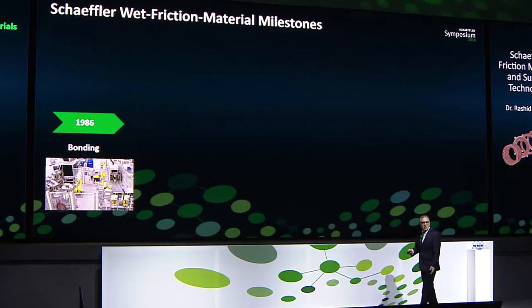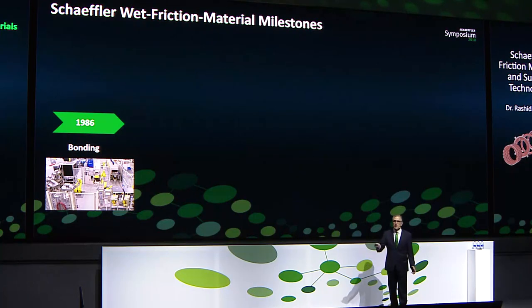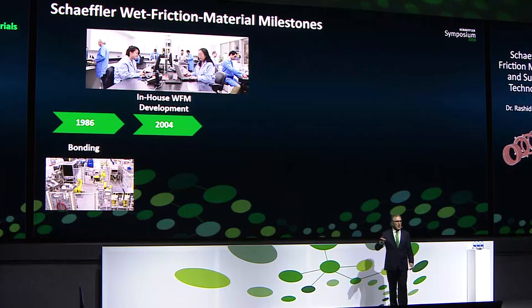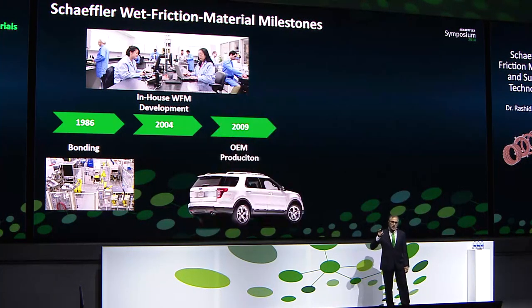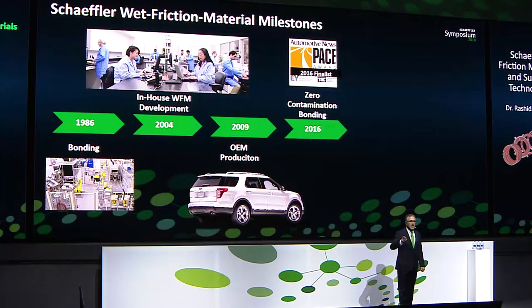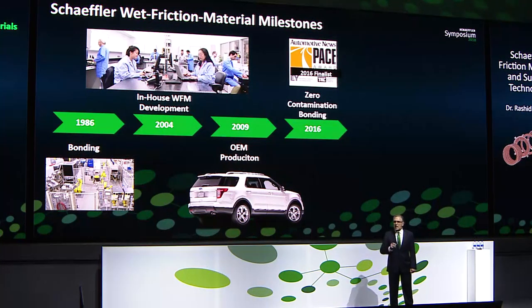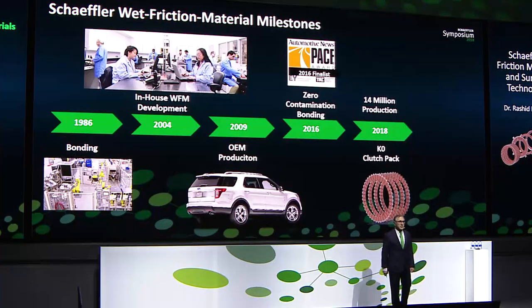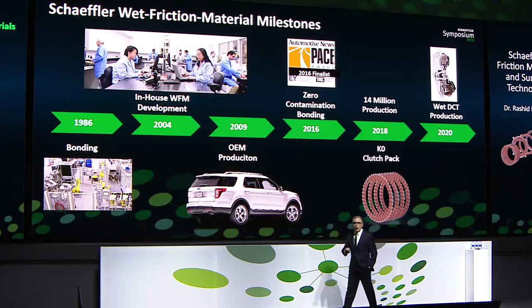Now that we know about friction material, let me finish with surface technology by going through the history of Schaeffler friction material. We are not new in this business. Since 1986 we were bonding friction material. In 2004 we started developing our own friction material in-house. In 2009 we started production. In 2016, as Thomas explained before launch, we invented the clean zero-contamination bonding, which eliminates sandblasting and dirty material for bonding — and as far as I know, we have IP on this, nobody else can do it. Now we are at more than 14 million parts in production. We just launched a K0 clutch pack for hybrid application, and in two years we are launching friction material for double clutch application.